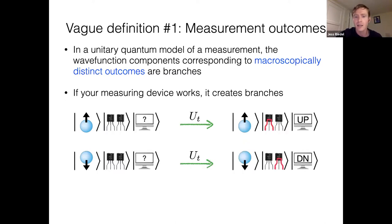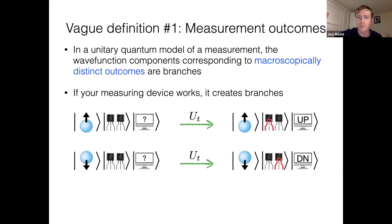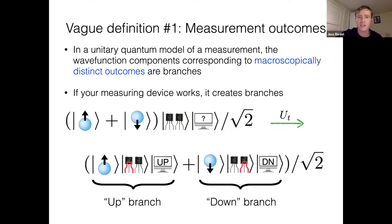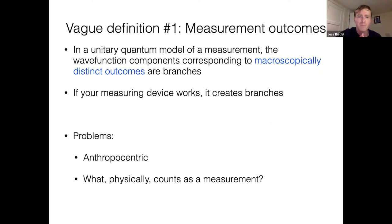If we put in an electron with spin down, we should get a macroscopically distinct evolution. So the first line is spin up — you end up getting a current in a transistor corresponding to the up outcome, and that's amplified up so your computer tells you it's up. Alternatively, if the spin is down, this unitary evolution results in the current flowing in some other transistor and your equipment telling you it's down. But from the linearity of quantum mechanics, if you put in an initial superposition of those two possibilities, that unitary evolution necessarily creates these macroscopic superpositions. That's one way to think about branches.